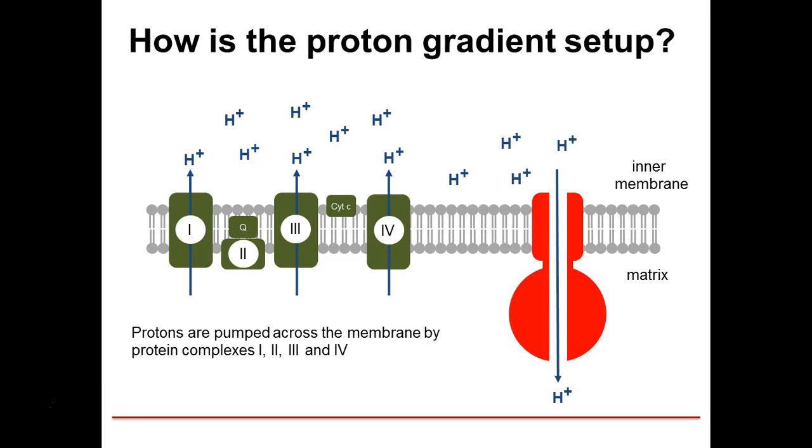To do that we use the electron transport chain. There are a number of proteins named complex 1, 2, 3, and 4, along with cytochrome C, that are used to create and generate that proton gradient such that it can drive ATP synthase.